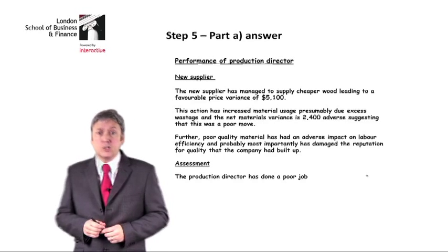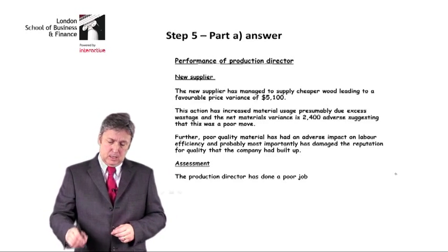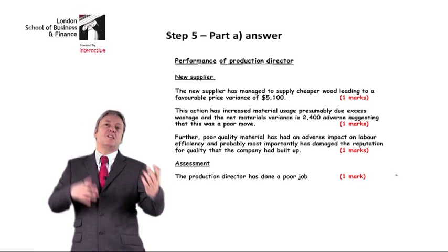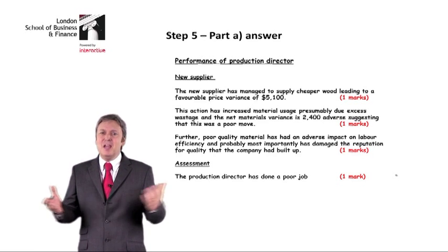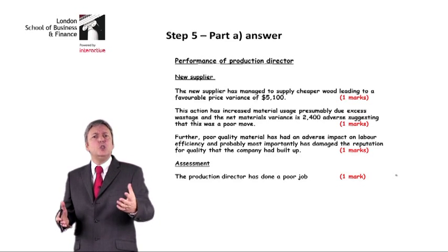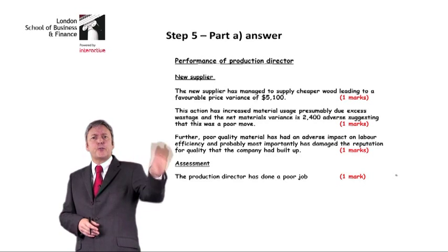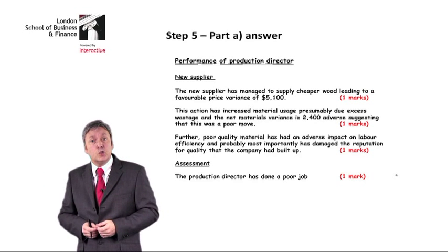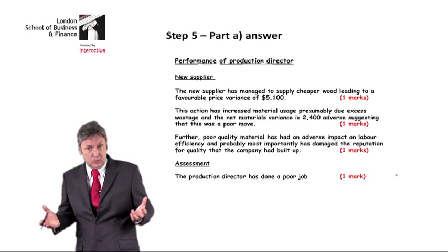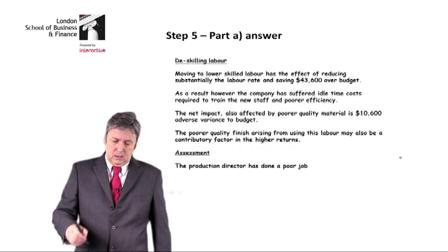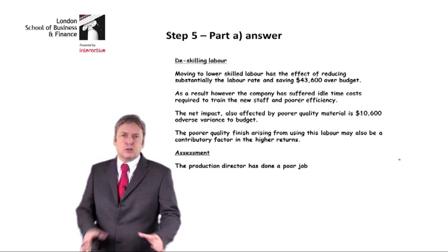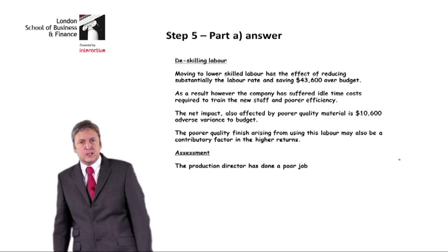I think the production director has done pretty poorly. So maybe we've got one, two, three, four marks — something like that. But if you've got three marks here, and this must be worth three marks somewhere, would you be happy? If you've got three and three — six out of seven — would you be happy? I think most of us would be deliriously happy. So, here's my second attempt: de-skilling labour. Got slightly more warmed up here. Hopefully it's slightly better.